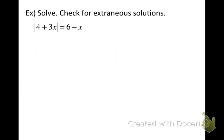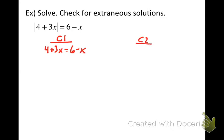We're going to try one more example because the process is the same whenever you have variables on both sides. For Case 1, we assume 4 plus 3x is a positive quantity, so 4 plus 3x equals 6 minus x. For Case 2, we assume 4 plus 3x is negative, so it's the opposite of the right side: 4 plus 3x equals the opposite of 6 minus x. Remember, put that entire expression in parentheses and put a negative sign in front — that's how you make it the opposite.